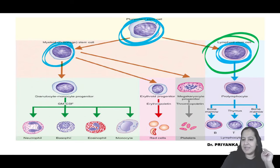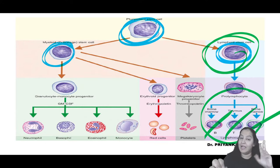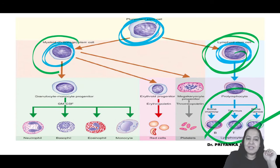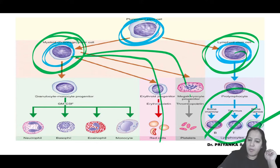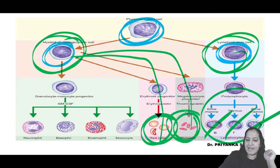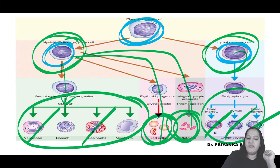You can see in the diagram: lymphoid stem cell is forming only lymphocytes - B lymphocyte, T lymphocyte, and natural killer cells. And myeloid stem cell is forming RBCs, platelets, and the remaining four WBCs: neutrophil, eosinophil, basophil, and monocyte.